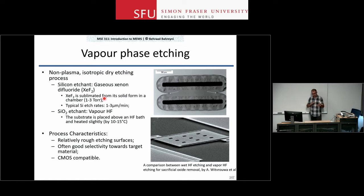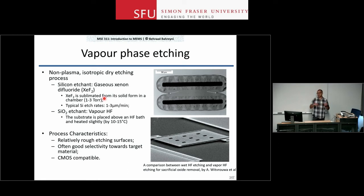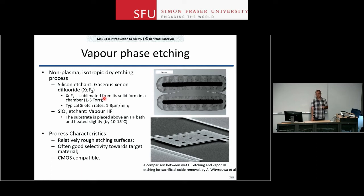For both of these chemical processes you usually have a relatively rough surface at the end — everything is chemical, so the tiniest imperfection is going to cause a deviation in etch rate. Usually you have very good selectivity, and because you do not have a plasma or high-temperature process or any fancy mechanisms, the process is CMOS compatible, meaning it is nice to the processing steps that happened before it and won't cause new problems.